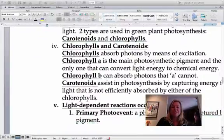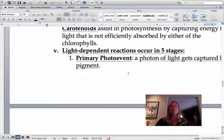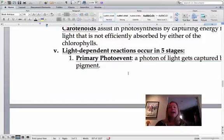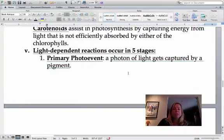Okay, let's get back to your notes here. So the light dependent reactions or the light reactions, so these require sunlight, are going to happen in five stages. First one is going to be a primary photo event. And that's where the light actually gets captured by a pigment.